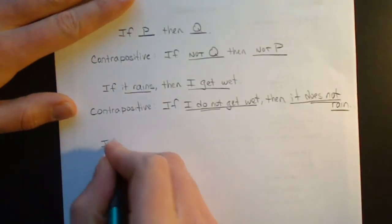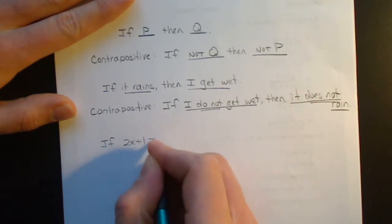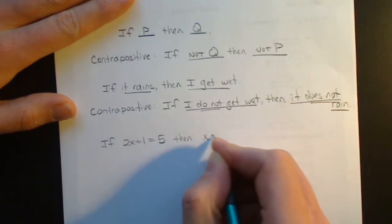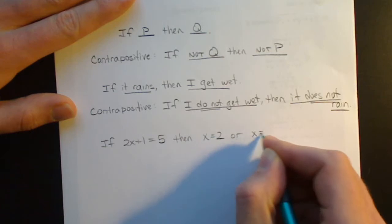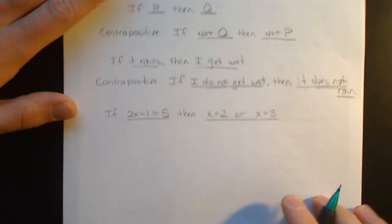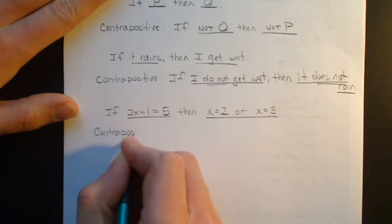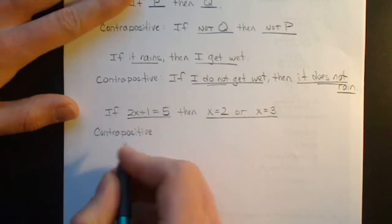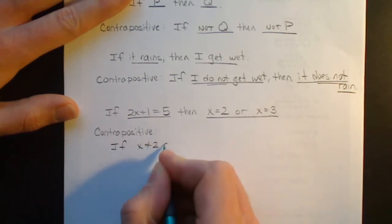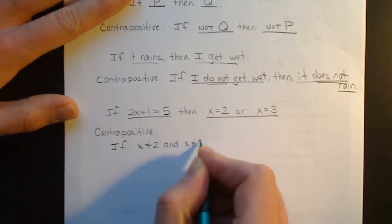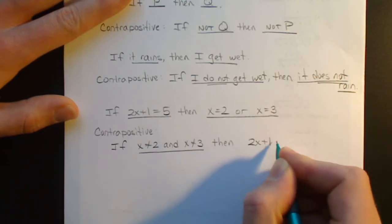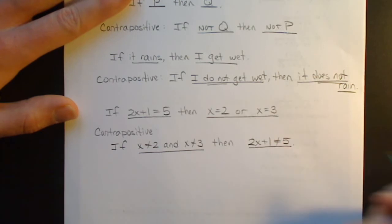Second example: our original statement is if 2x plus 1 equals 5, then x equals 2 or x equals 3 — hypothesis, conclusion. The contrapositive would be: if x does not equal 2 and x does not equal 3, then 2x plus 1 does not equal 5.